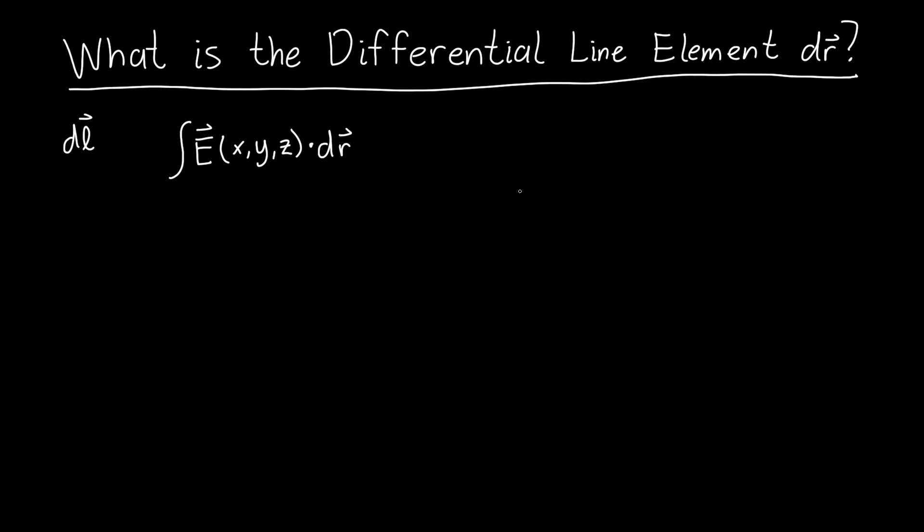And so one example of this is say our electric field or our vector function looks like just a bunch of arrows pointing to the right. So for example, E might just be equal to a constant times x hat, so it doesn't actually depend on the coordinates. And maybe we want to integrate it from some point over here a to some point over here b.